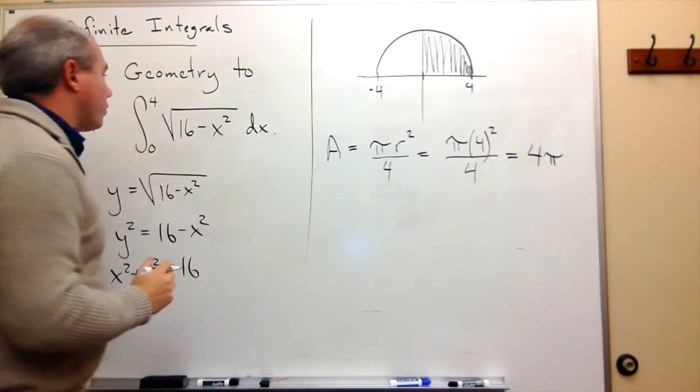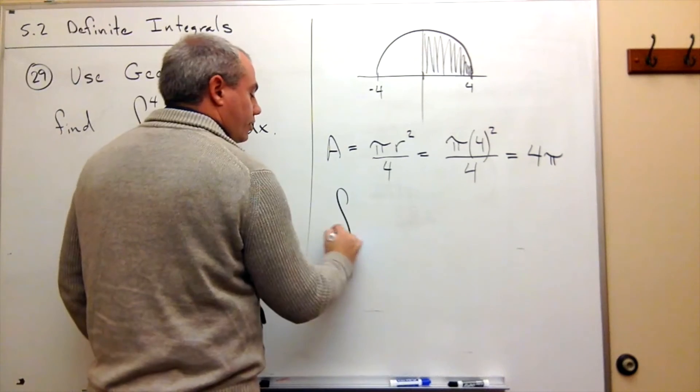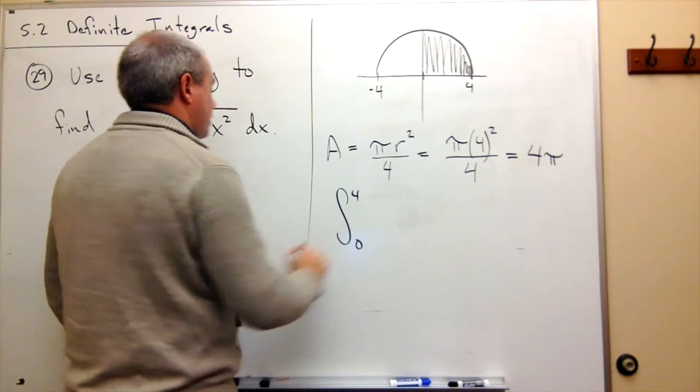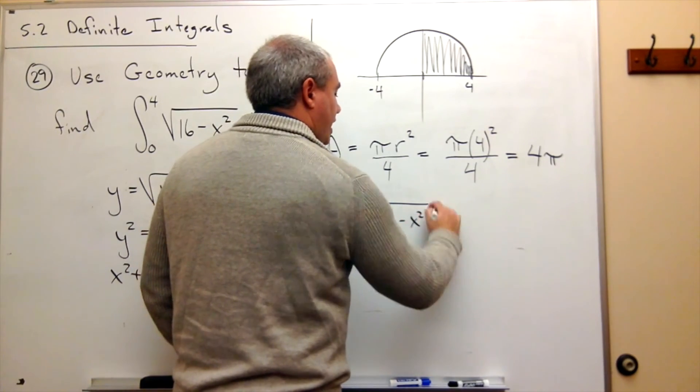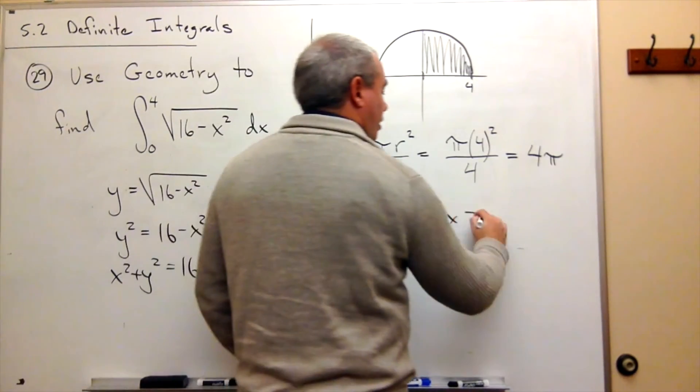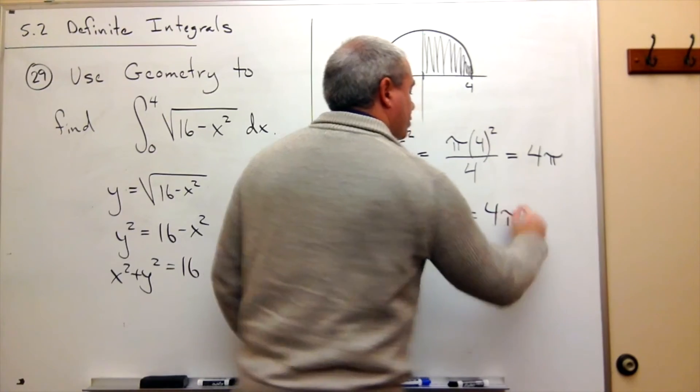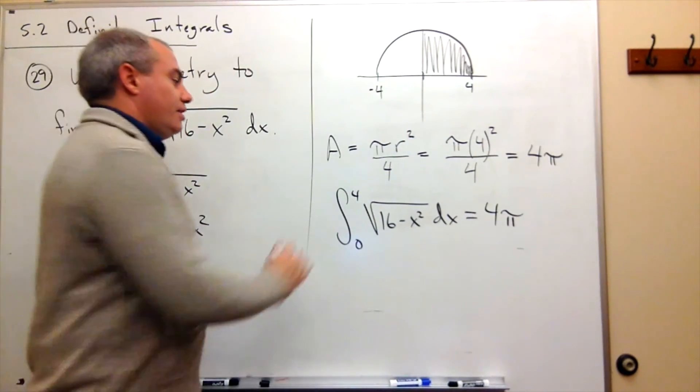So if we're answering the question, what is the integral from 0 to 4 of the square root of 16 minus x squared dx? The answer, without having to really do any calculus, is 4 pi.